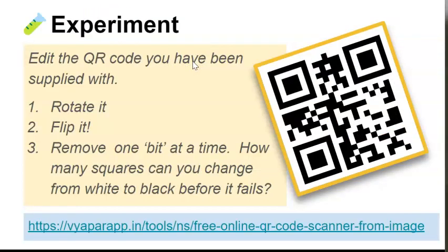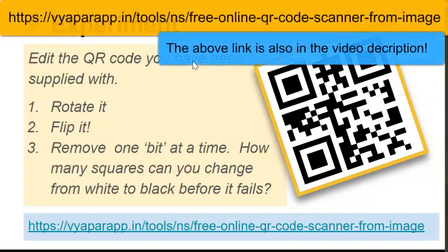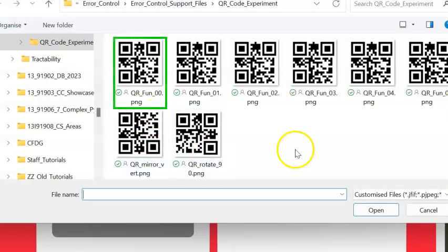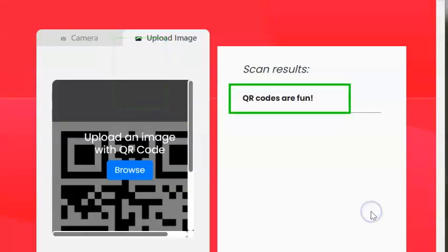On the Support Files area, I've given you an original QR code, and then a series of codes where that original has been flipped, rotated, and had some of the bits removed. We can check to see if the code works by using an online tool. The original code is called QRFund00, and when I scan it, it tells me that QR codes are fun.